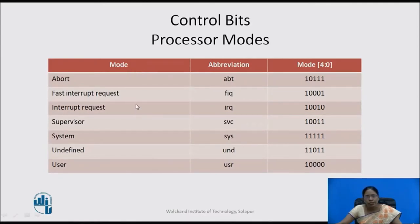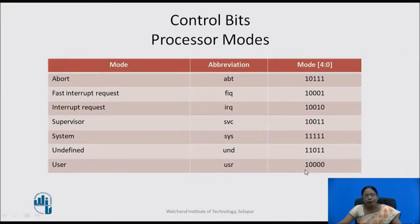These are the different processor modes: abort, fast interrupt request, interrupt request, supervisor, system, undefined, and user. All these modes can be identified based on different bit patterns in the mode field bits 0 to 4 of the CPSR.